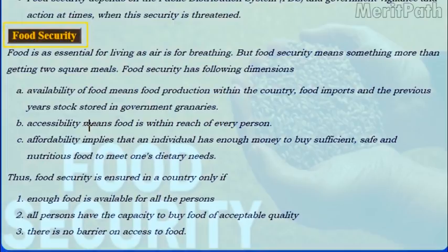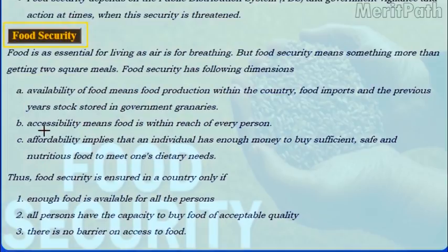Food is essential for living as air is for breathing. But food security means something more than getting two square meals. Food security has the following dimensions: Availability of food means food production within the country, food imports and the previous year's stock stored in government granaries. Accessibility means food is within reach of every person. Affordability implies that an individual has enough money to buy sufficient, safe and nutritious food to meet one's dietary needs.